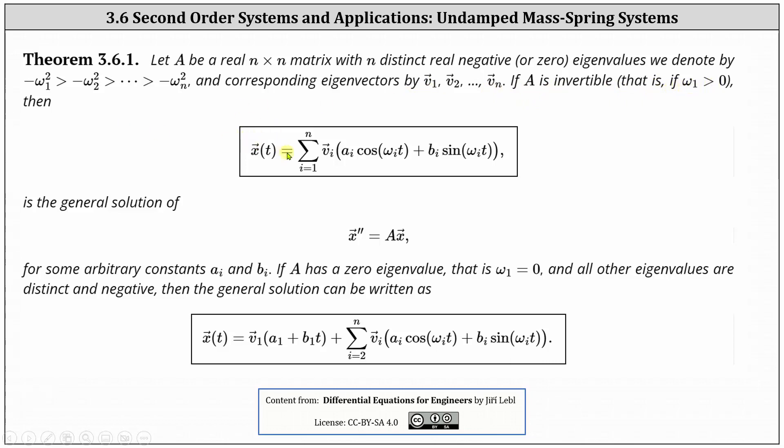then X of T is equal to the sum from i equals one to n of the vector V sub i times the sum of A sub i times cosine of omega sub i T and B sub i times sine omega sub i T. It's the general solution of X double prime equals A times X for some arbitrary constants A sub i and B sub i.